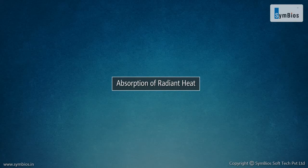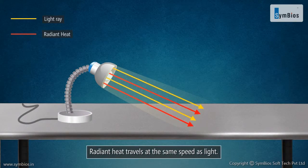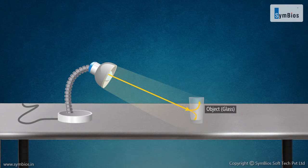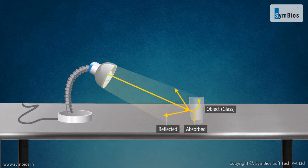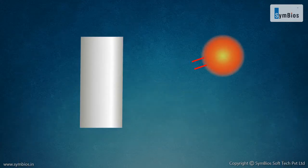Absorption of Radiant Heat. Radiant heat travels at the same speed as light. When light falls on an object, it is partially absorbed and partially reflected. A part of it may also be transmitted through the object, for example glass. In the same way,